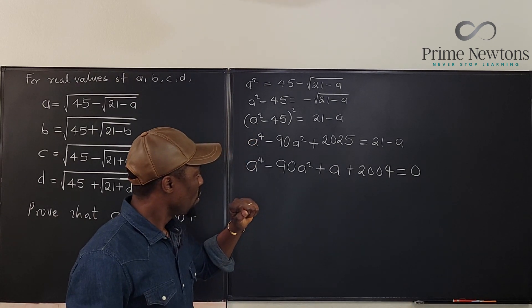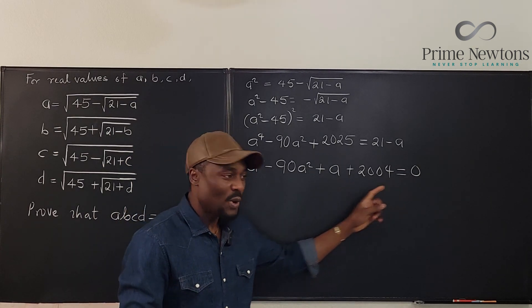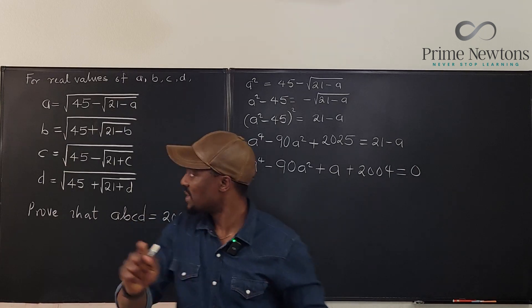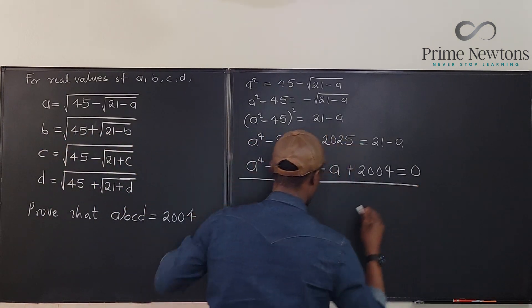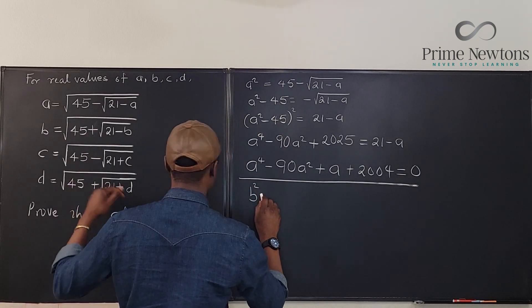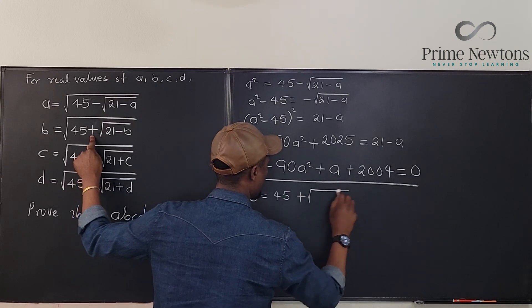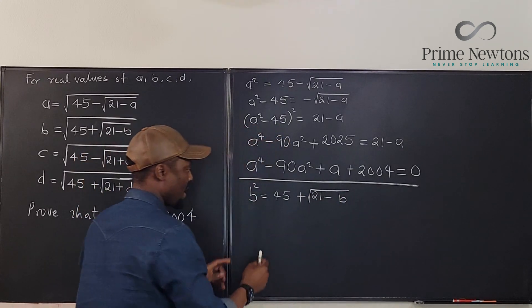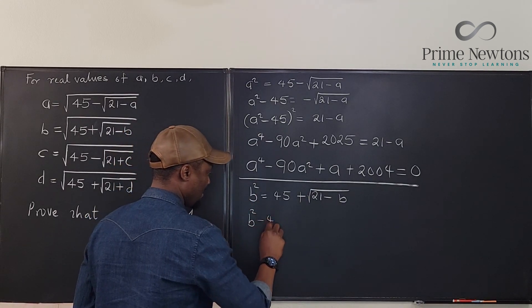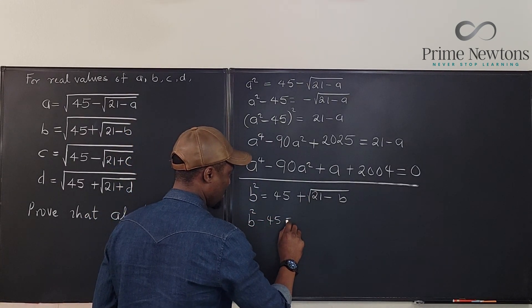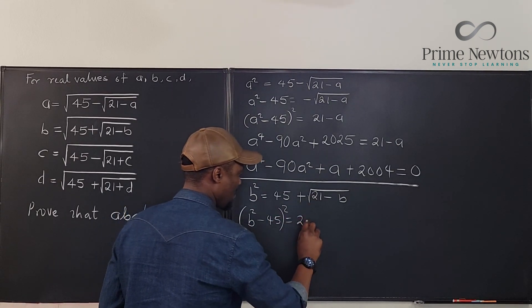So the question is, if A is one of the roots, will I get this same polynomial if I did this same expansion for B? So we have, let's draw a line here. So we're going to have B squared minus 45. It's going to be plus the square root of 21 minus B. If you bring this here and you square it, you're going to end up with B squared minus 45 will be equal to. And then we square it. It will get rid of this. You have 21 minus B.